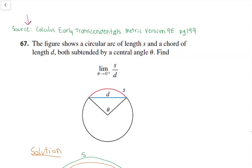Today we will have a look at the following calculus problem which is taken from this textbook. We have a figure that shows a circular arc of length s and a chord of length d both subtended by a central angle theta. We have to find the limit of theta going to zero from the positive direction of s divided by d.